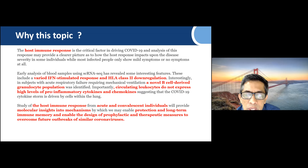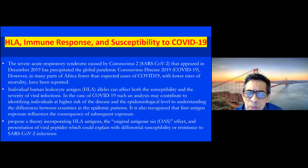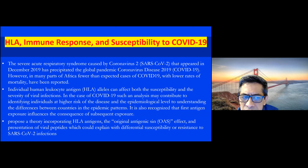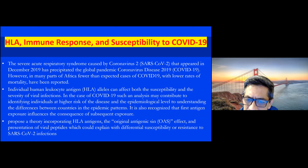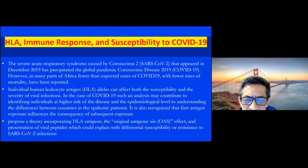These insights can enable design of prophylactic and therapeutic measures to overcome future outbreaks of similar COVID or coronaviruses. Acute SARS appeared in December 2019 and precipitated a global pandemic, but there were many parts in Africa where there were fewer than expected COVID-19 cases and lower rates of mortality. So is it the individual human leukocyte antigen alleles that affect both susceptibility and severity of viral infections? In the case of COVID-19, such an analysis can contribute to identifying individuals at higher risk of disease.